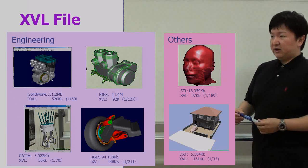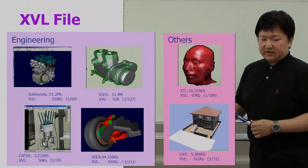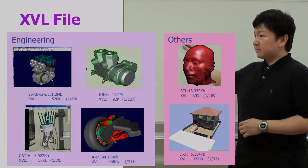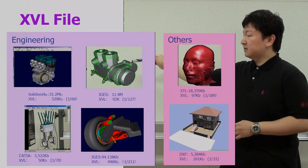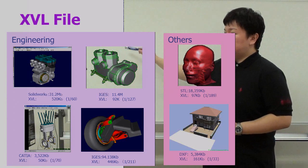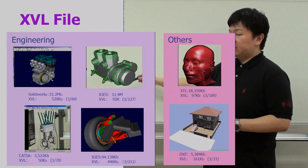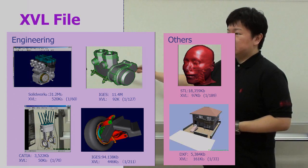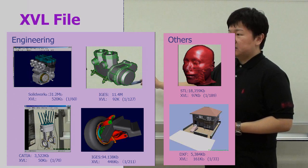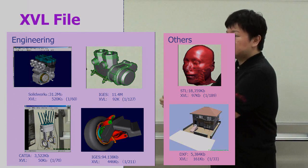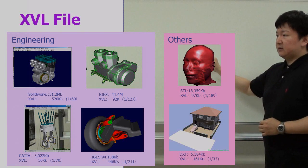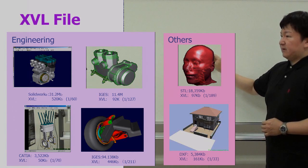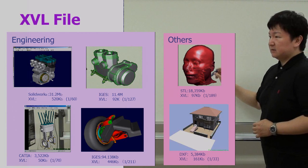XBL-5 has very good, complex technologies. Here's an example of using XBL-5. This is an engine model — the CAD model is very large, as you know. But if you use XBL format, this huge model can be compressed into a very tiny size. Our research applies this to medical models using XBL-5.